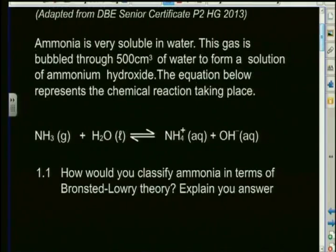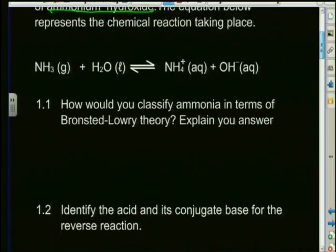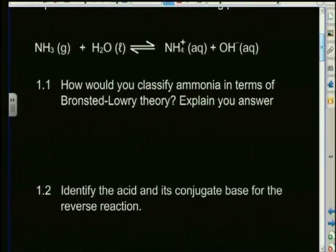The question reads: ammonia is very soluble in water. This gas is bubbled through 500 cm³ of water to form a solution of ammonium hydroxide. The equation represents: NH₃(g) + H₂O(l) ⇌ NH₄⁺(aq) + OH⁻(aq). How will you classify ammonia in terms of Bronsted-Lowry theory?